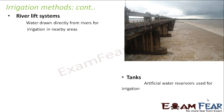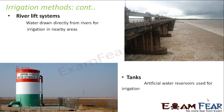The last method is tanks. Tanks are artificial water reservoirs used for irrigation — artificially constructed areas where water can be stored. When there is too much rain during the rainy season and we do not need so much water, we can store some for later use when water is scarce. Water stored in tanks is connected through a pipe to fields, where it can be used for irrigation.